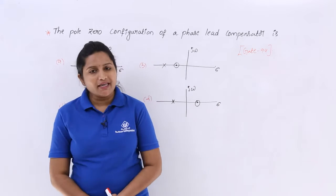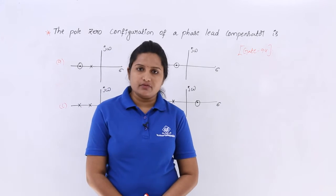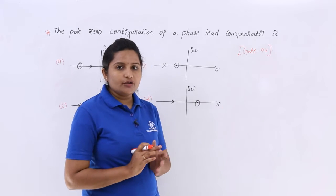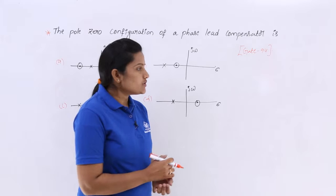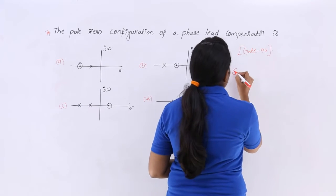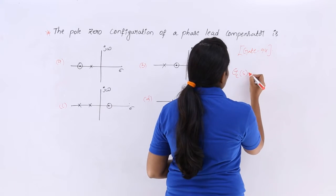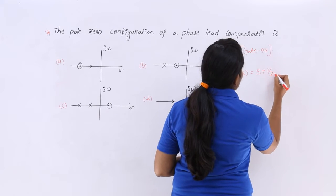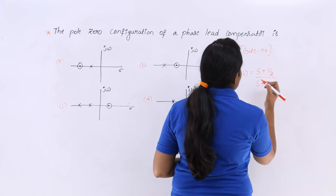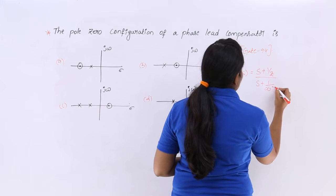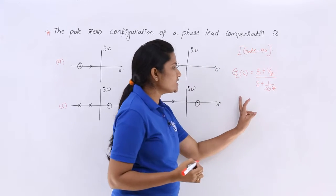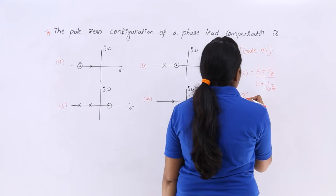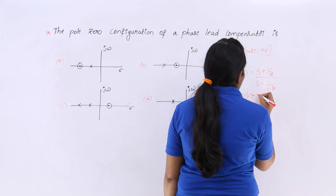We already analyzed both lead compensator and lag compensator. Here the general transfer function of a lead compensator is equal to S plus 1 by Z divided by S plus 1 by alpha Z. This is your general transfer function of a lead compensator where alpha is greater than 1.